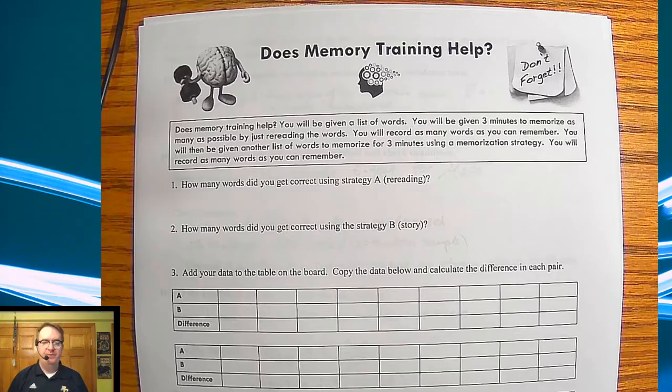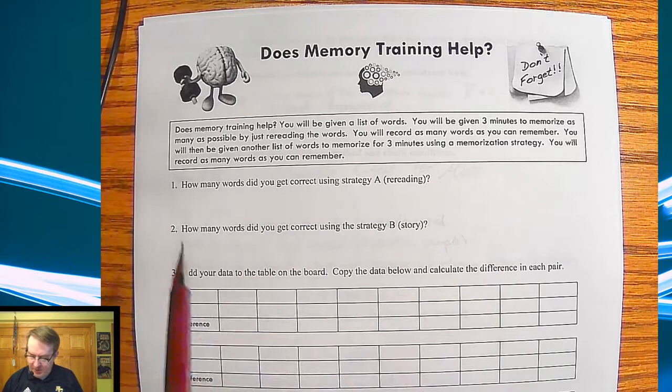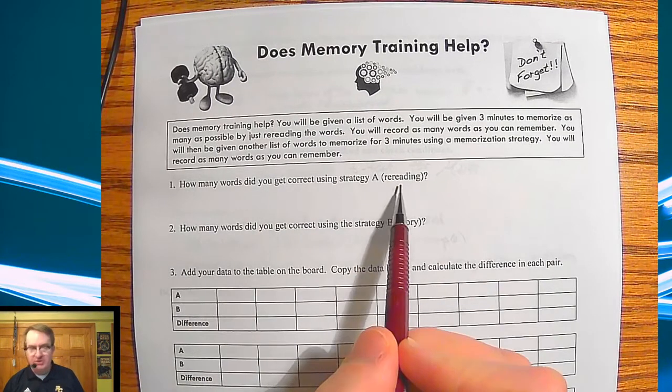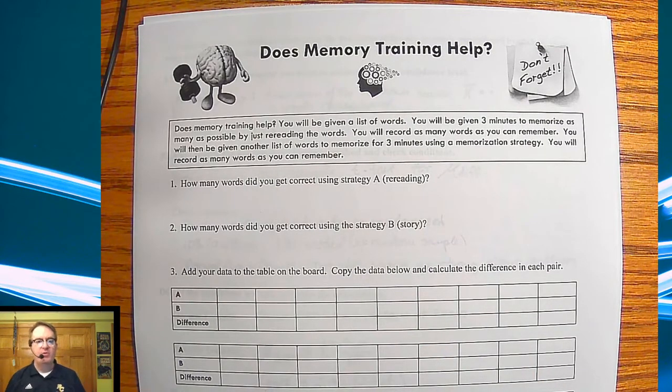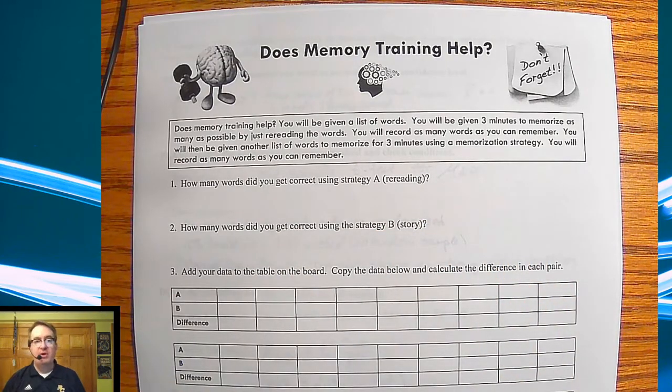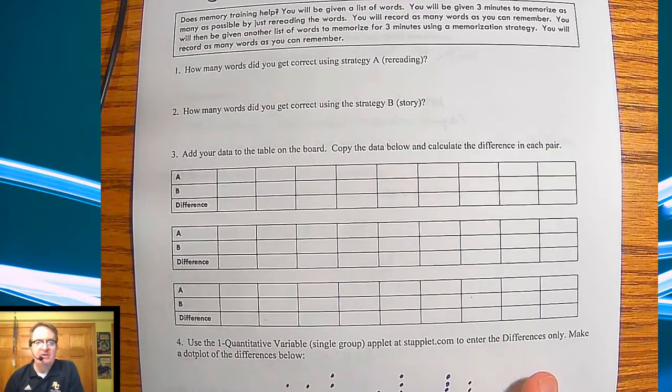So the setup here is this. What we ended up doing was we would give you one to two different ways of memorizing words. So strategy A was you're going to just reread the list of words over and over and over again. And then the second way was you're going to make up a story between all the words in your head. And then we would try to see which memorization strategy was the better.